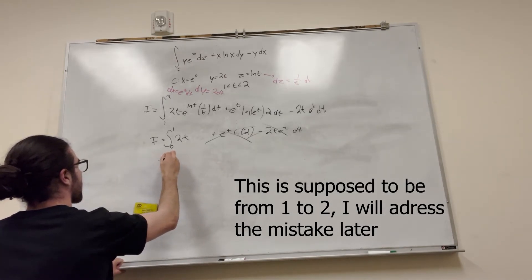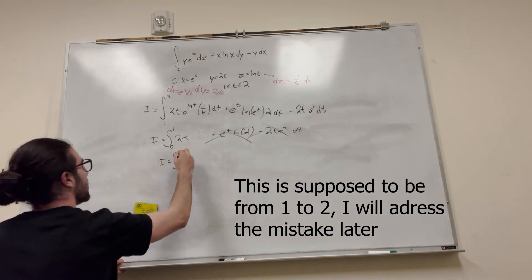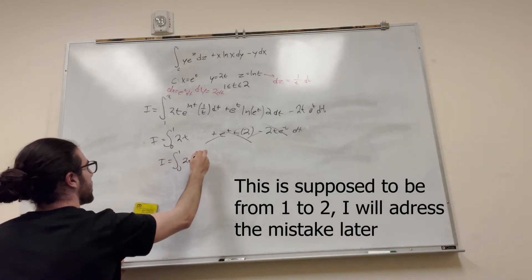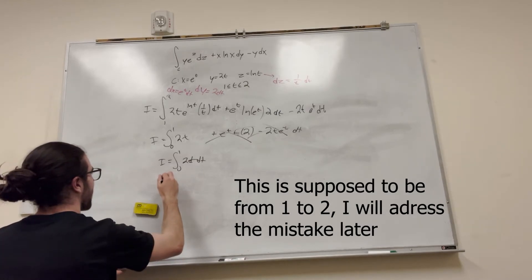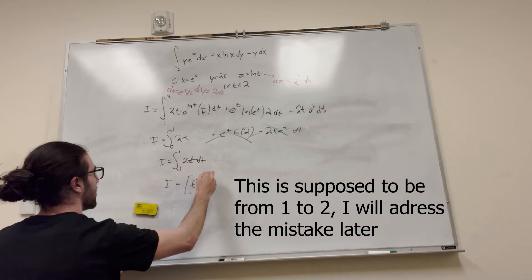The integral is equal to 0 to 1, 2t dt. How do we solve this, guys? I don't know. It's pretty tough, right? So I just go to t squared, 0 to 1.